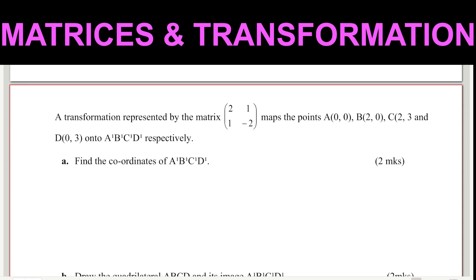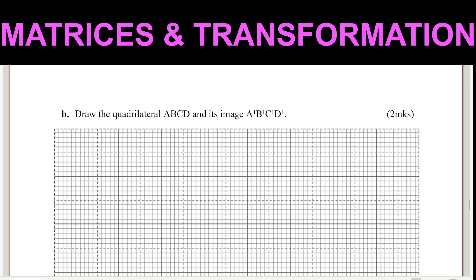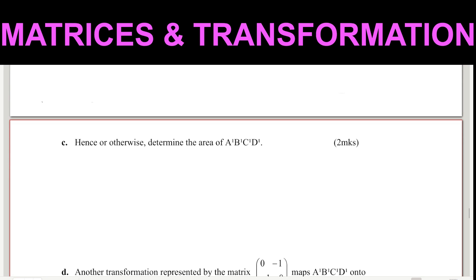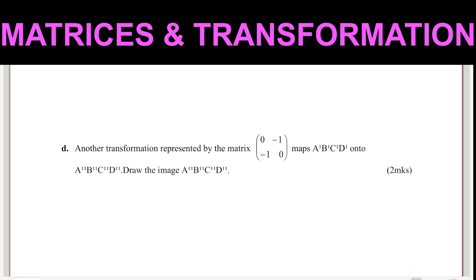Let's solve this question on transformation and matrices. A transformation represented by the matrix 2, 1, 1, negative 2 maps the point A(0,0), B(2,0), C(2,3), and D(0,3) onto A', B', C', D' respectively. Find the coordinates of A', B', C', D'. Then draw the quadrilateral ABCD and its image A'B'C'D'. Hence or otherwise, determine the area of A'B'C'D'. Another transformation represented by the matrix 0, negative 1, negative 1, 0 maps A', B', C', D' onto A'', B'', C'', D''. Draw the image A''B''C''D''.